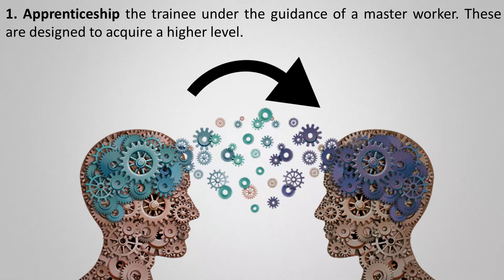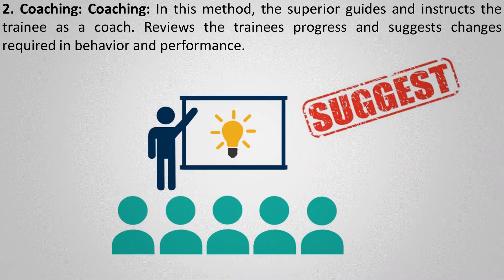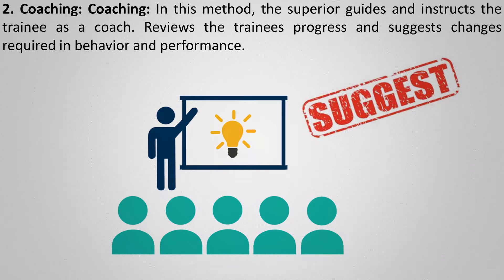The next method is coaching. In this method, a supervisor guides and instructs the trainee. The coach and trainee usually agree to set goals and suggest how to achieve them. Periodically they review those goals to check performance and suggest changes where needed. The trainee works directly with the senior manager, who takes full responsibility. The trainee is being groomed to eventually replace the senior manager and relieve them of some work.